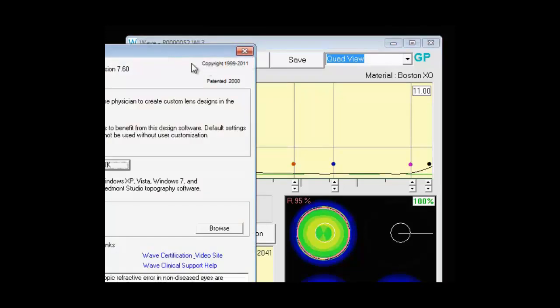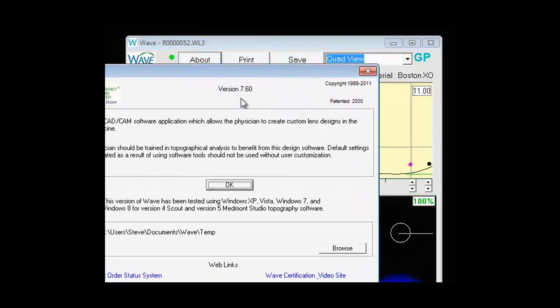Then we have the About button. If you click on that, it will tell you what version of WAVE you're running, as long as the description has some useful links.